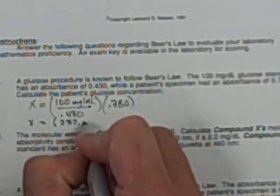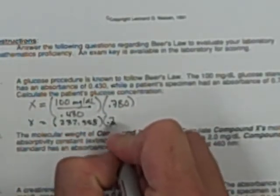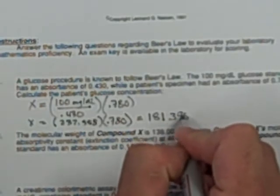So when I do the math, I find that 100 divided by 0.430 is 232.558 multiplied by 0.780 gives me 181.395.